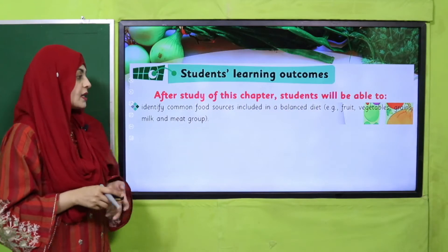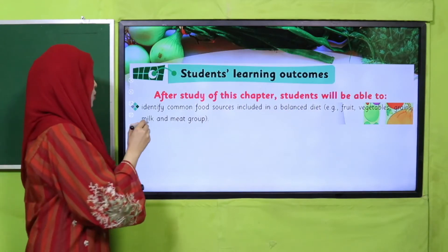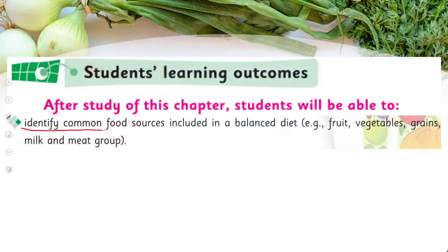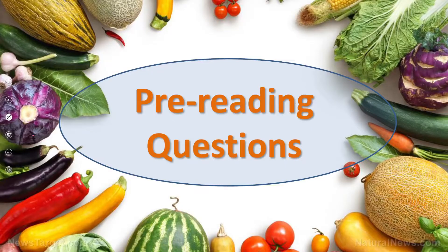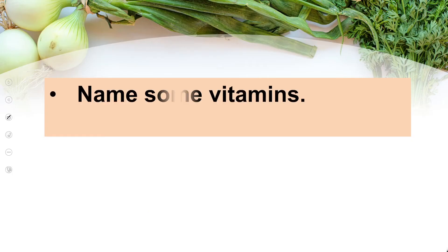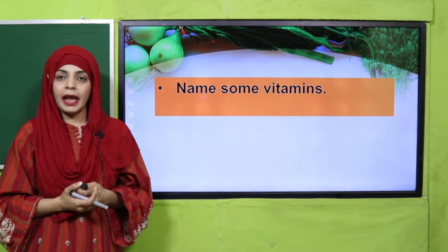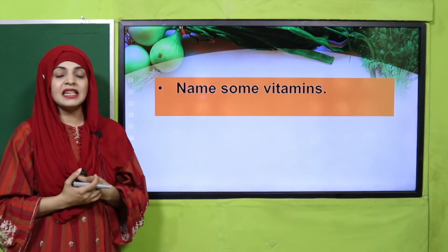In today's lecture, students will be able to identify common food sources included in a balanced diet — like fruits, vegetables, grains, milk, and the meat group. Some pre-reading questions before the reading: name some vitamins — A, B, C, D, E, and K.